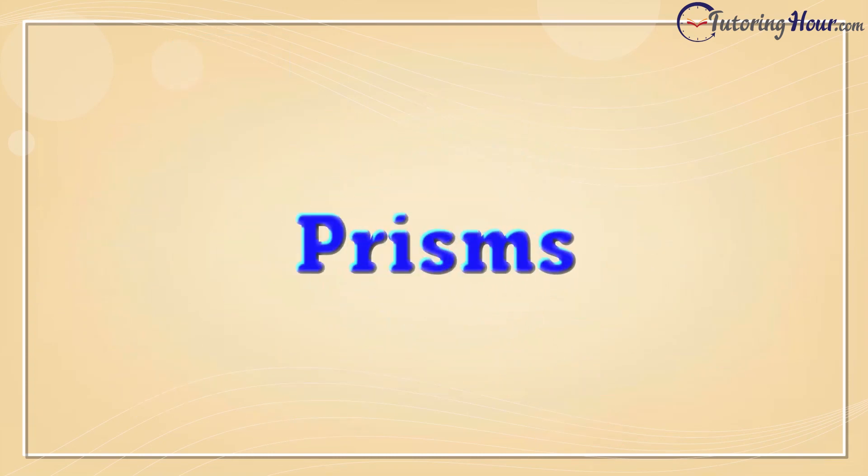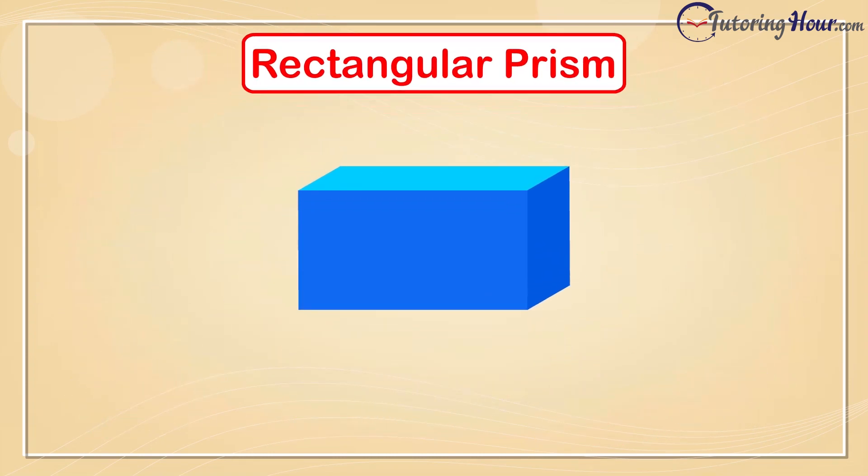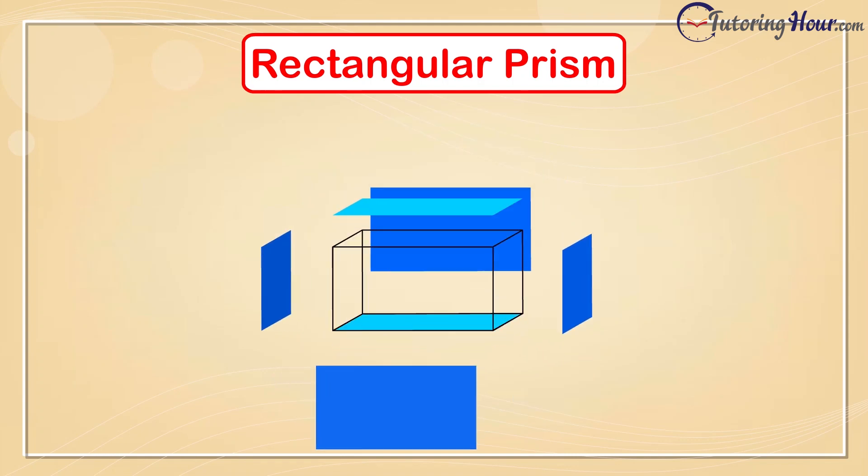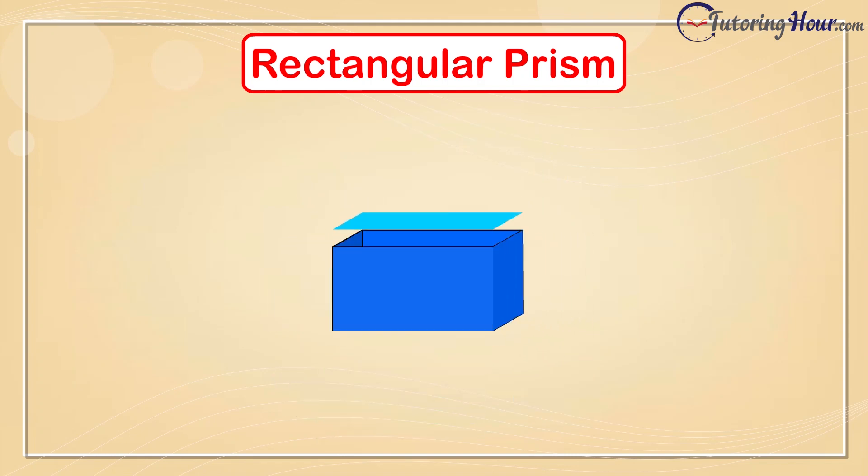We'll first take a look at the prisms. Meet our first solid shape, the rectangular prism. In some countries, a rectangular prism is called a cuboid. A rectangular prism has 1, 2, 3, 4, 5, and 6 faces.